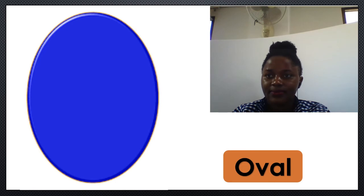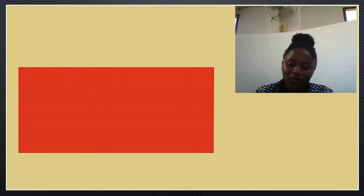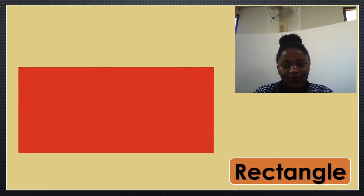Great. Okay, now I want to see if you have been following. Could you please tell me the names of these shapes? Number one — we have this. How do we call this? Good. It's a rectangle. Rectangle. Rectangle.